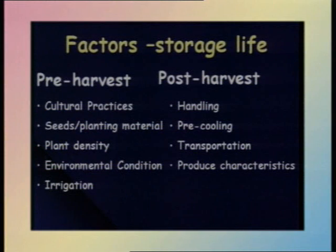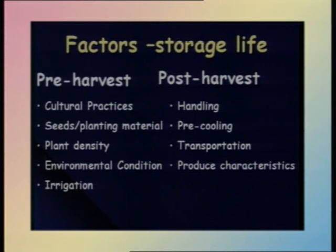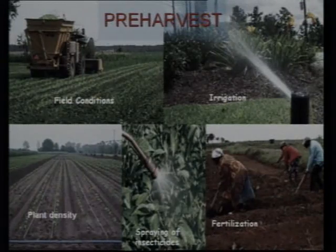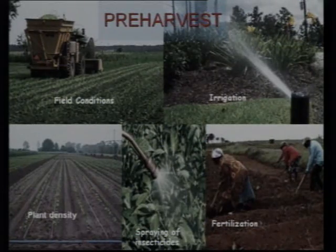When we store fruits and vegetables under any storage conditions, there are certain factors which regulate shelf life. We have classified these factors into pre-harvest factors and post-harvest factors. The pre-harvest factors include the conditions in the field where your plant material is growing — the quality of seed being used, and plant density, which refers to the distance between individual plants.